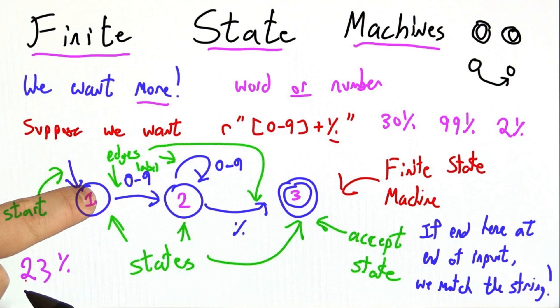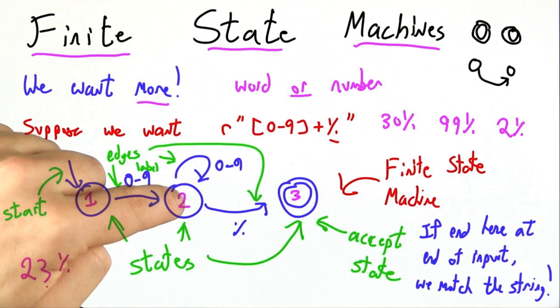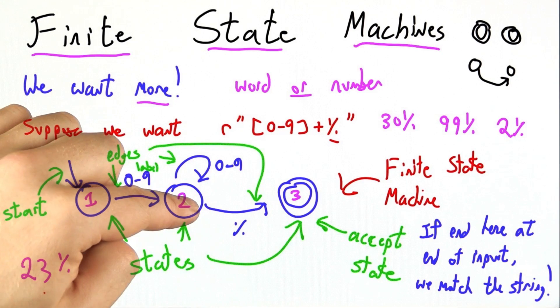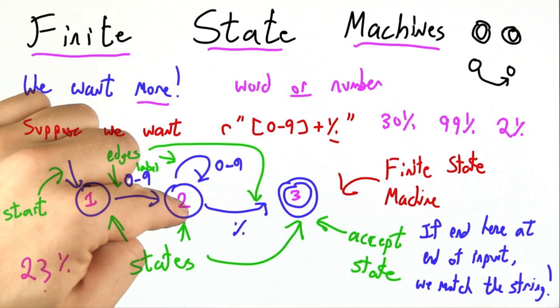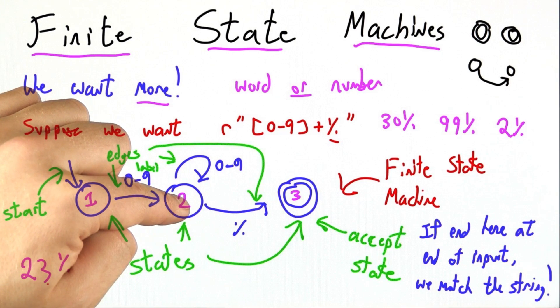Let's trace through what happens on input 23%. We start in the start state, and the character we see is a 2, so we follow this edge to state 2. Now the next thing we see is a 3, so we follow this edge back to state 2. These are sometimes called self-loops - a loop that takes me back to right where I started.